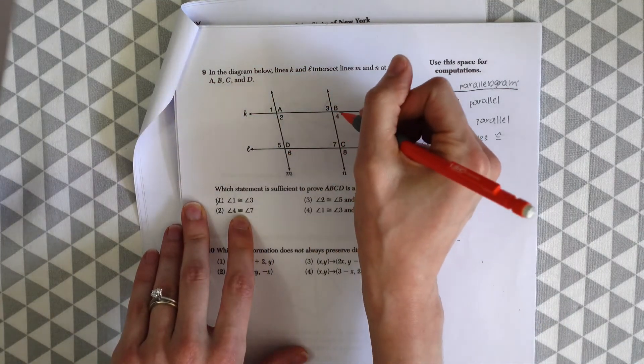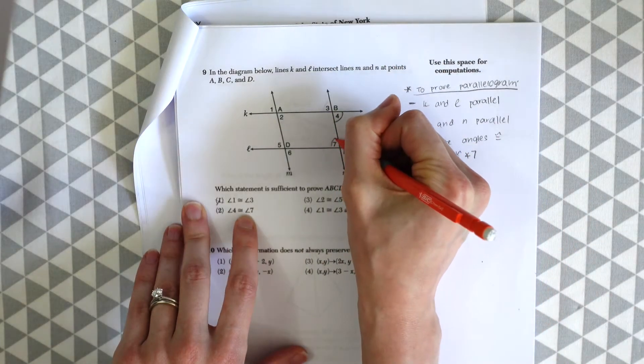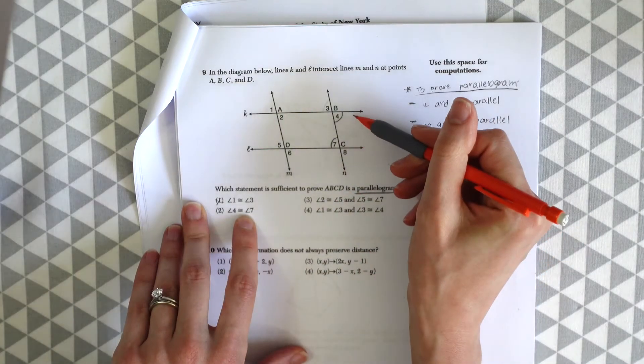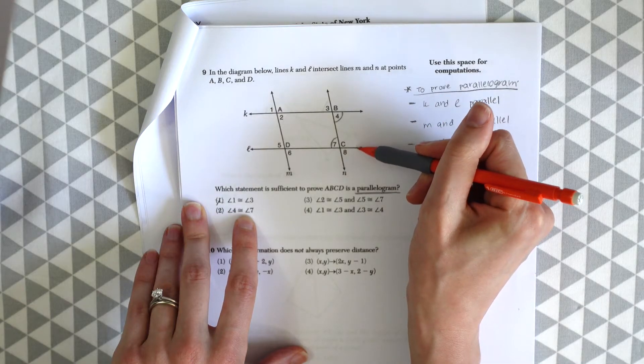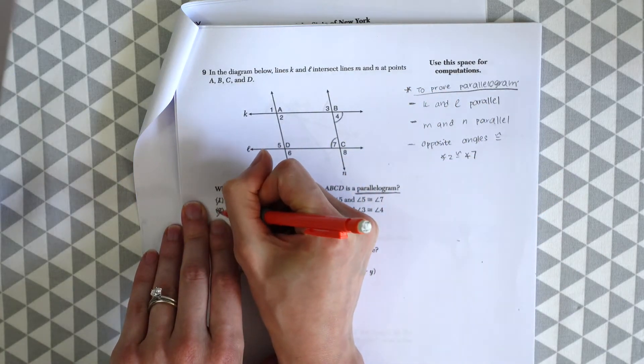Let's see the next choice, choice two. Angle four is congruent to angle seven. So now we can see that lines K and L are parallel but this tells us nothing about line M. So it's missing information. So it's not enough.